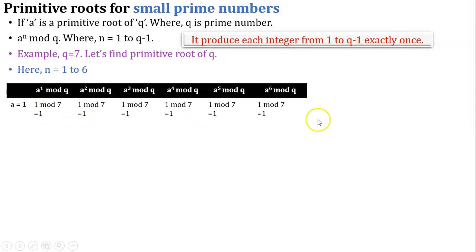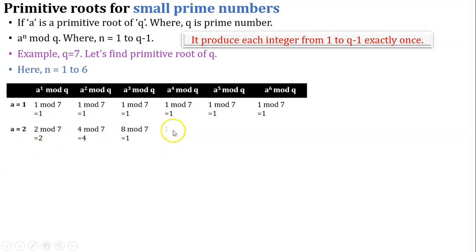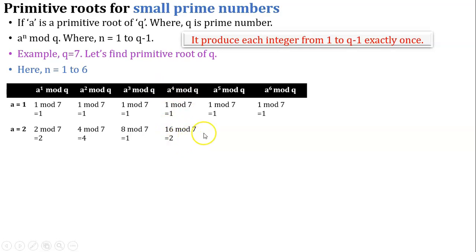For the next value, a equals 2. The first equation gives 2, second gives 4, third gives 1, and fourth gives 2. Here 2 is repeated: a raised to 1 mod q and a raised to 4 mod q both give 2. So our condition is not satisfied, and there is no need to find a raised to 5 mod q or a raised to 6 mod q.